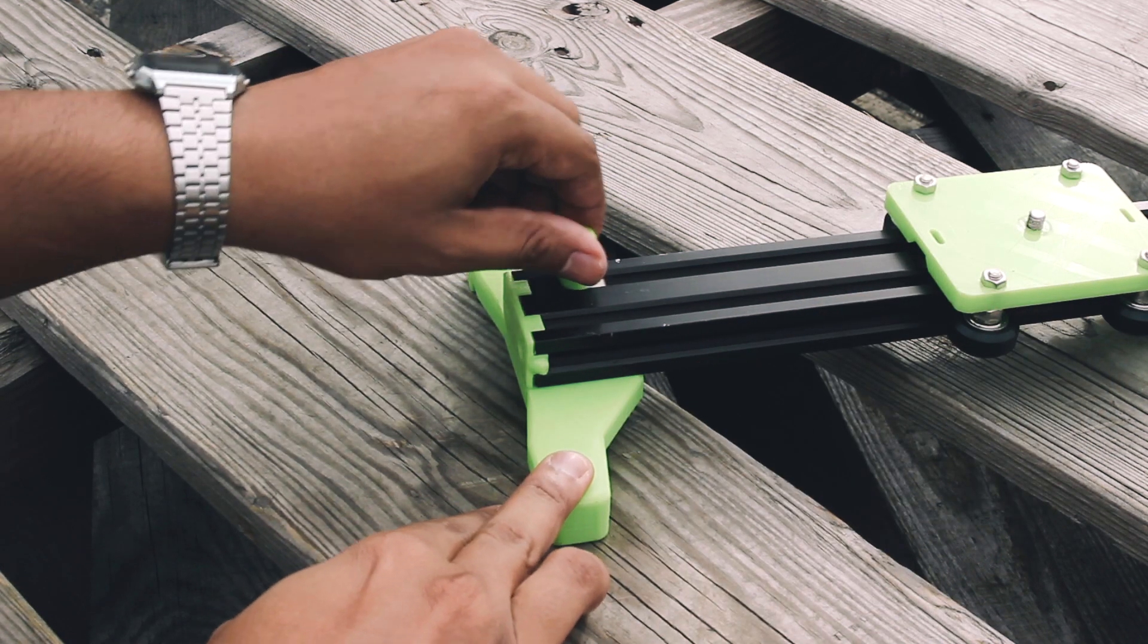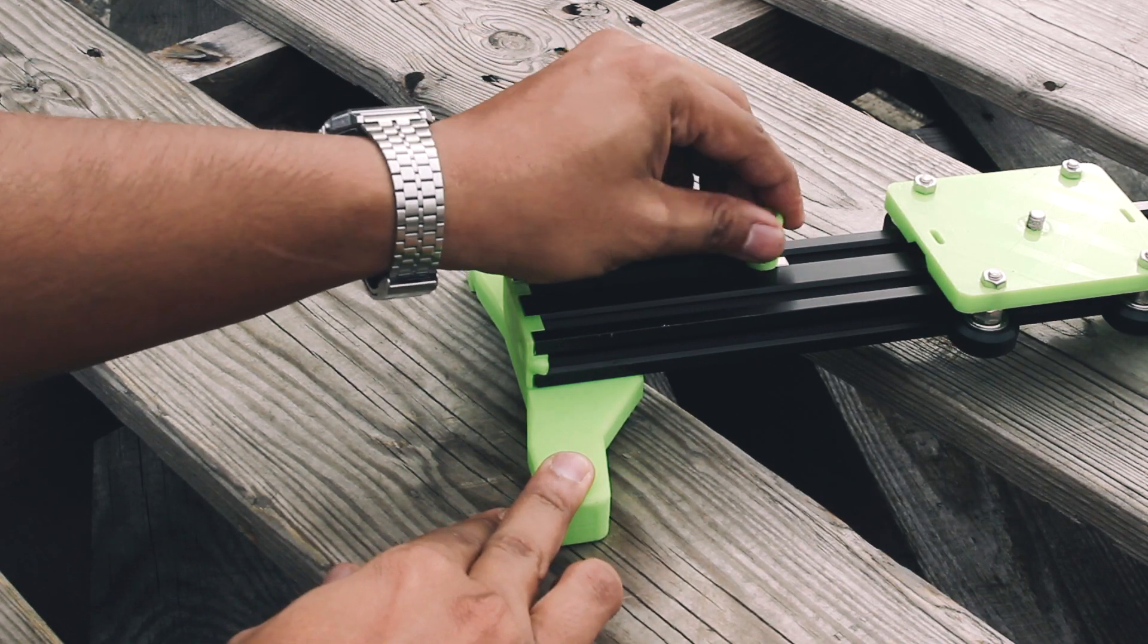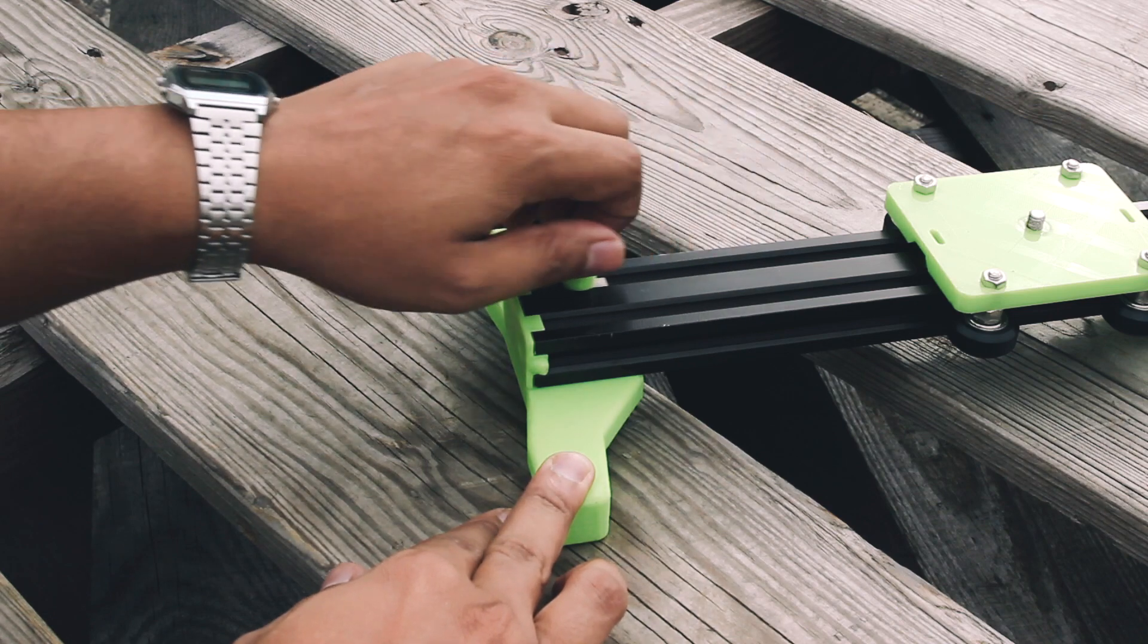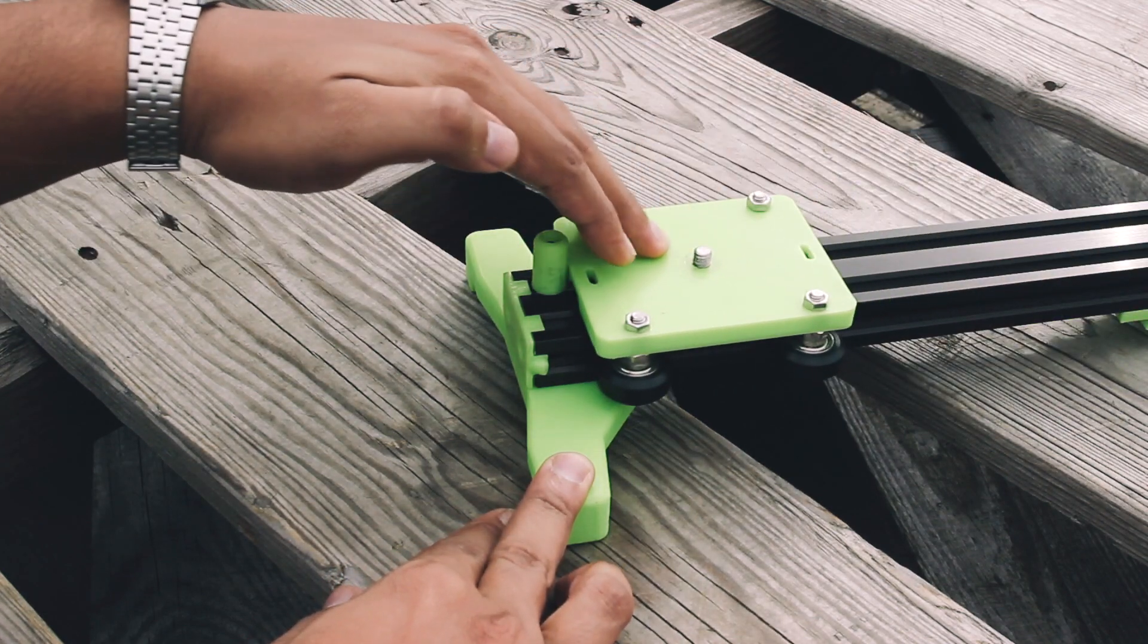Hi welcome to Oakmoon Crafts and this week we're gonna make this 3D printed camera slider and only cost about $25 to make. Let's start with a list of parts you're gonna need.